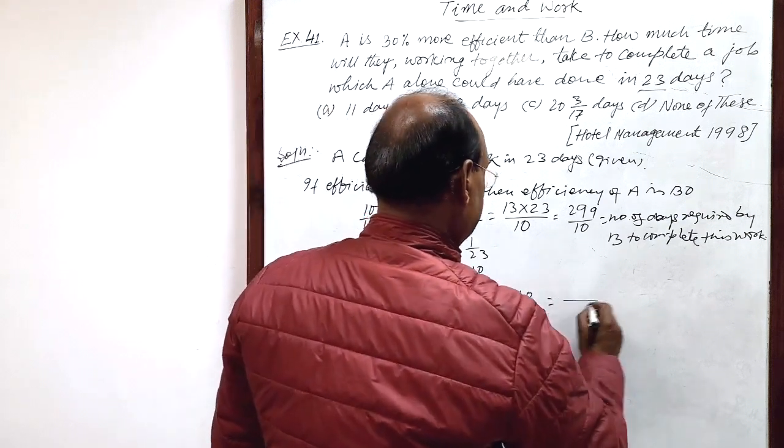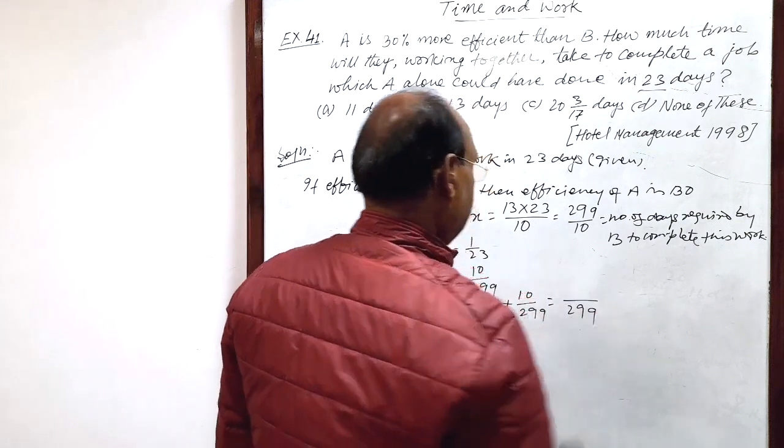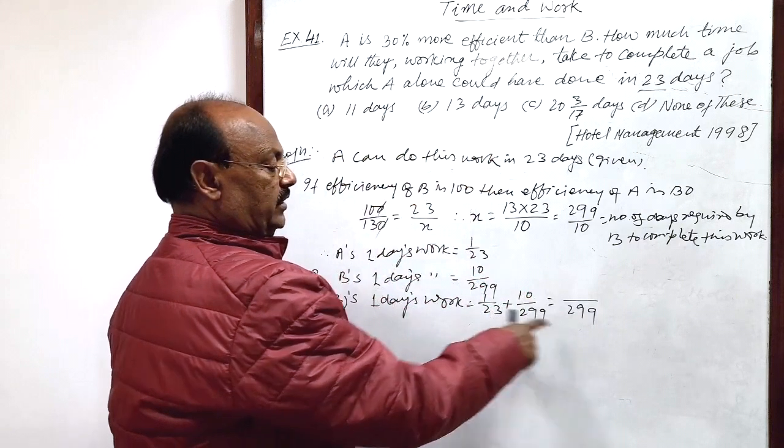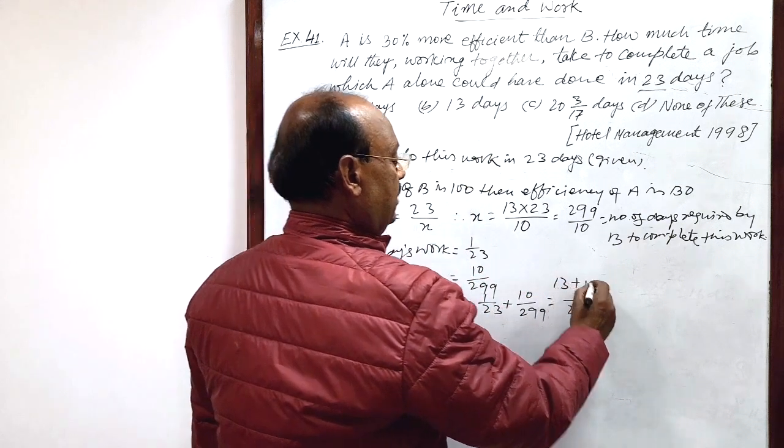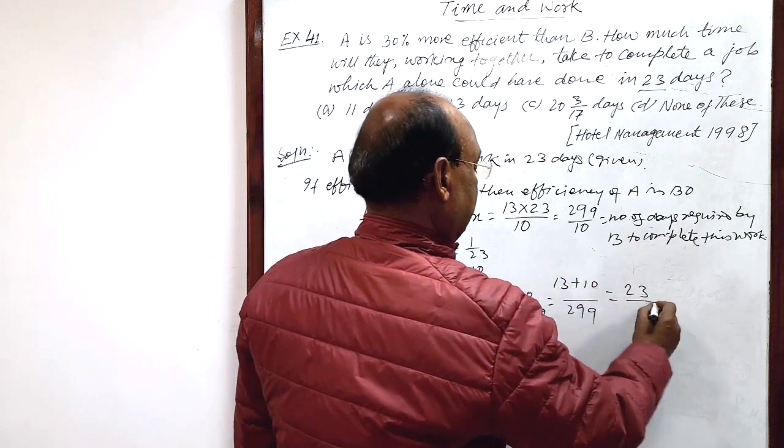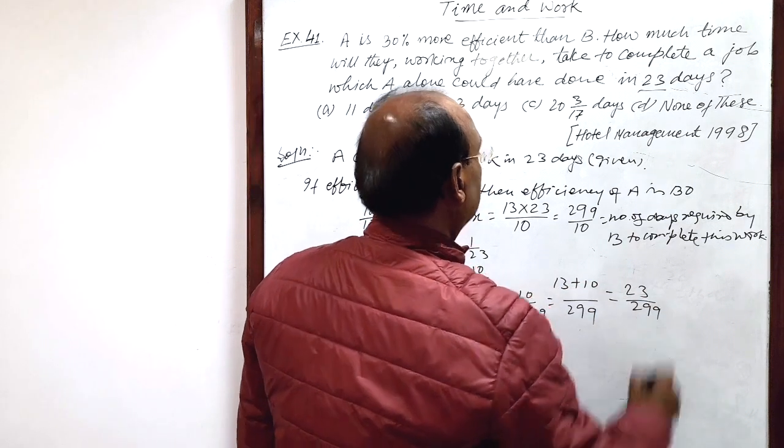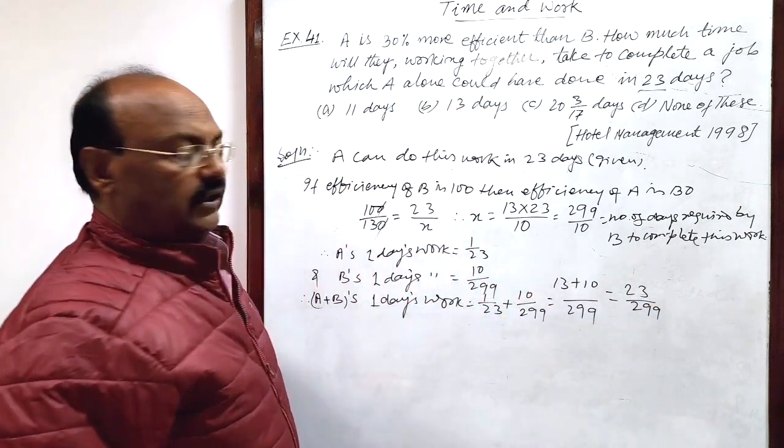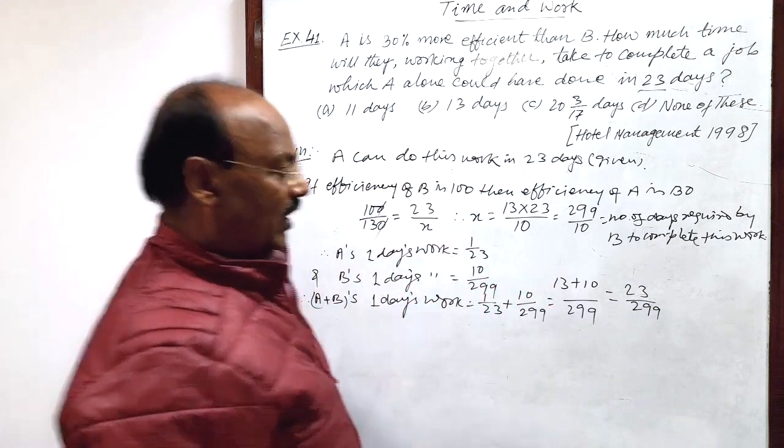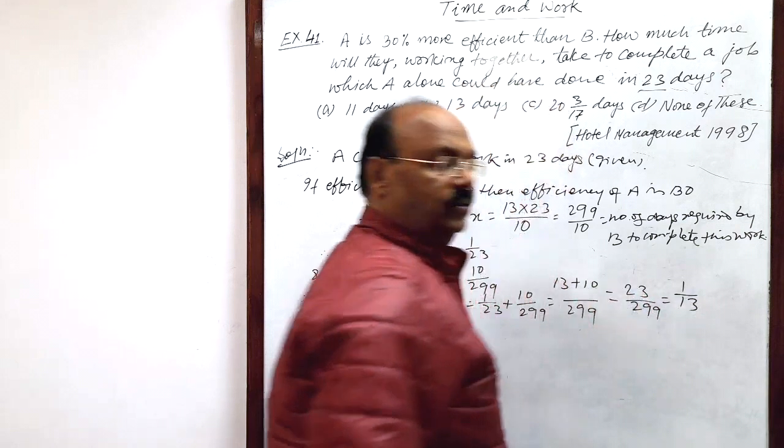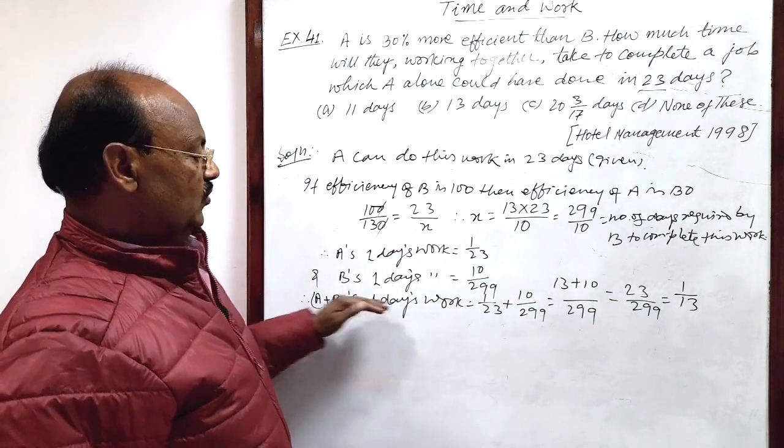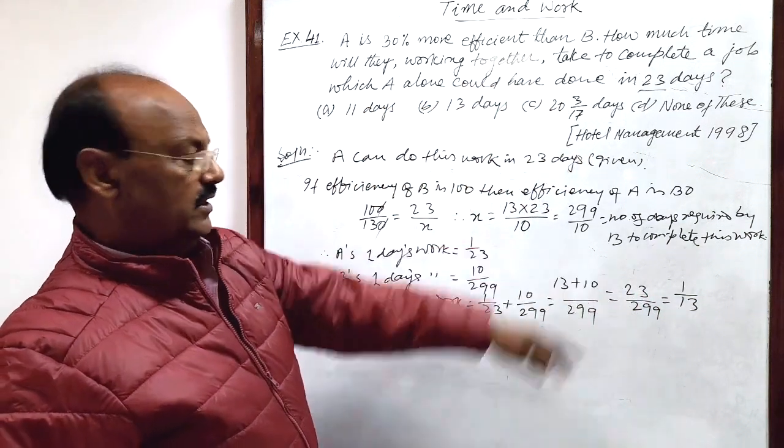LCM will be 299. 23 into 13 is 299. So here 13 plus 10, this is equal to 23 by 299, and this is equal to 1 by 13. So A plus B's one day's work is 1 by 13.